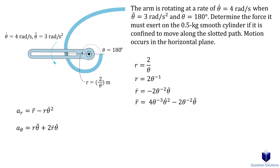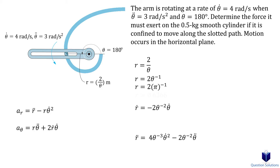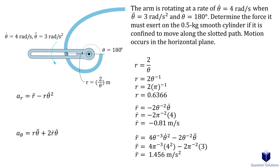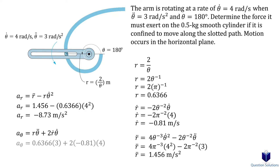A rule of thumb: if a question doesn't say whether the radial coordinate is in radians or not, check to see if there is a trigonometric term like sine or cosine. If it does, you don't need to convert degrees to radians — otherwise you do. Note that we're given the angular velocity and angular acceleration in the question. Let's plug in the values and solve, then figure out the radial and transverse accelerations.